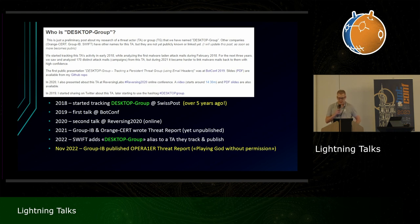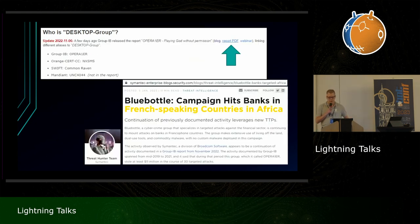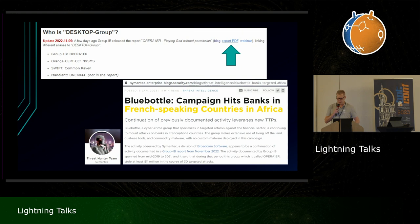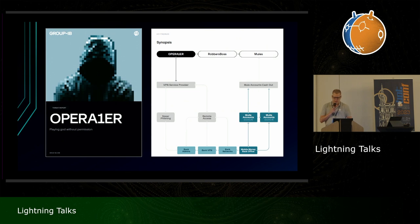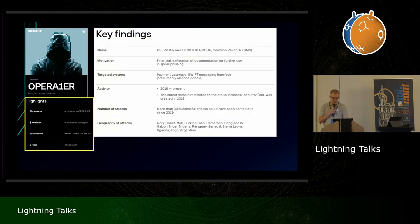Just last November, Group IB published a report after some collaboration — they'd been holding it back for over a year. I updated my blog post to include a download link where you can get the PDF report without giving out your email address. I also added some aliases for this group. The report has a nice overview about how the organization and attacks work. They're using VPNs, spear phishing, and mule accounts to cash out money.